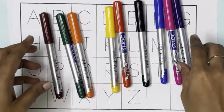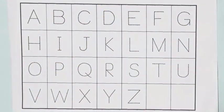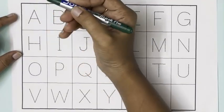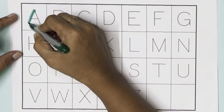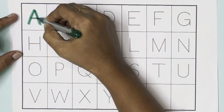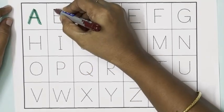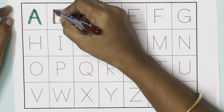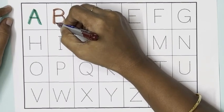Purple color, green color. A for apple, brown color, B for ball.